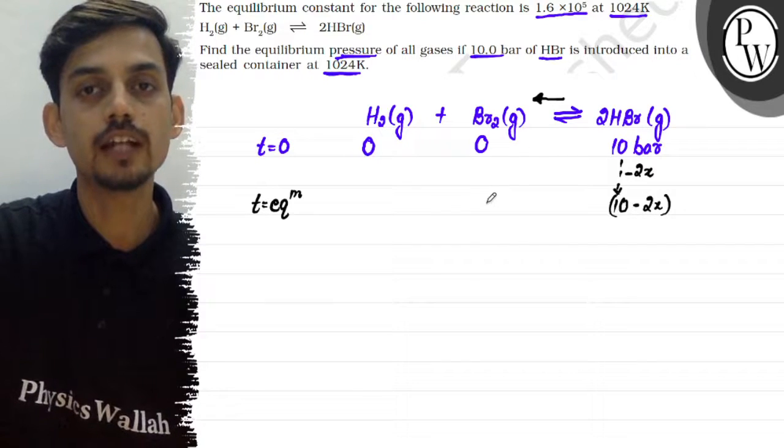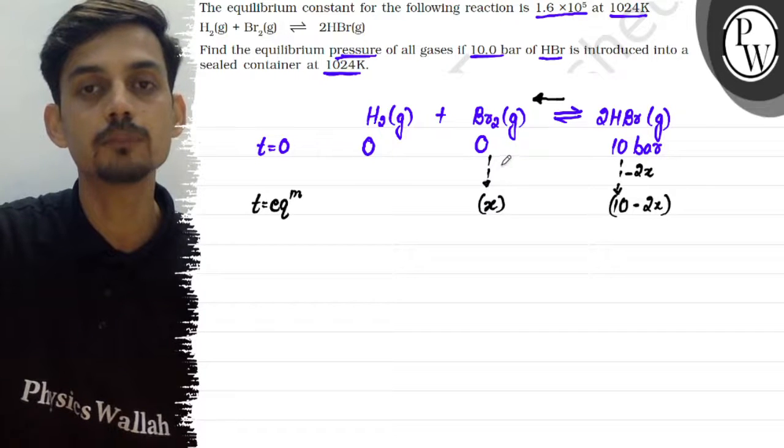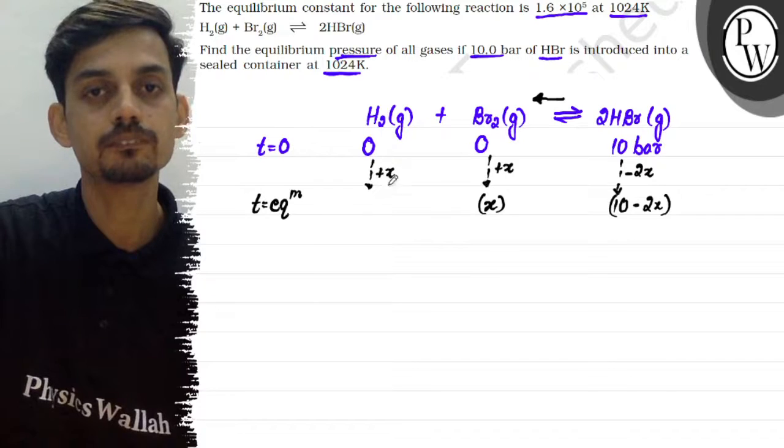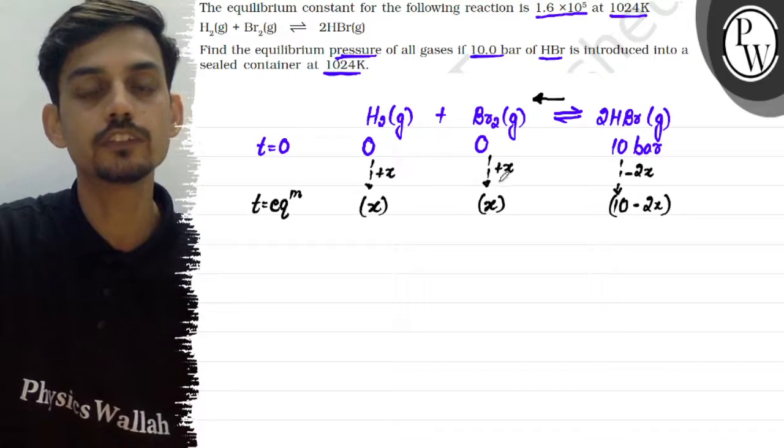The pressure of Br₂ will be x. According to stoichiometry, if 2x of HBr decomposes, we get x of H₂ and x of Br₂. So the pressure of both H₂ and Br₂ will be x bar.